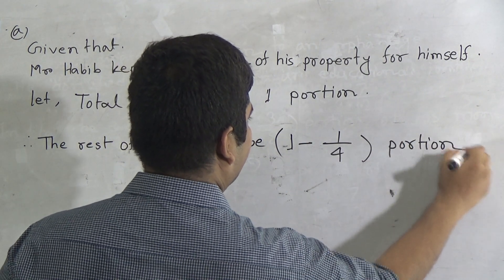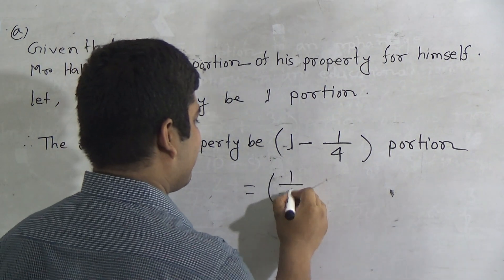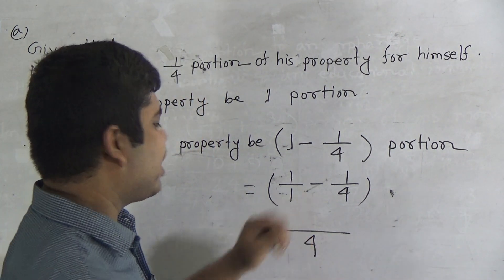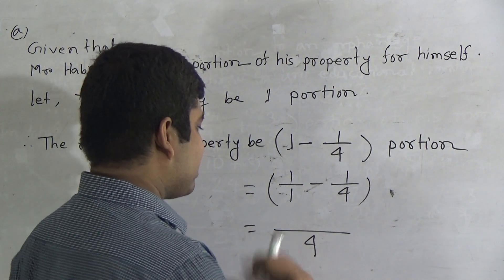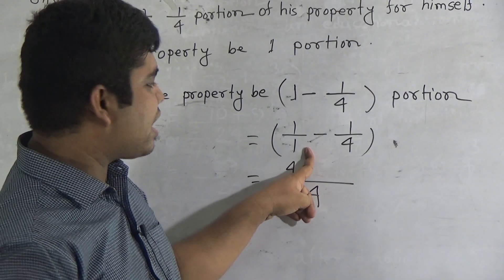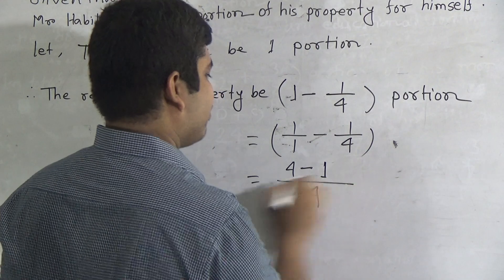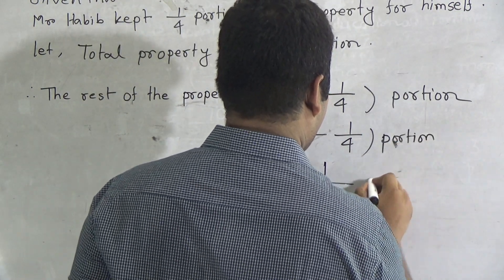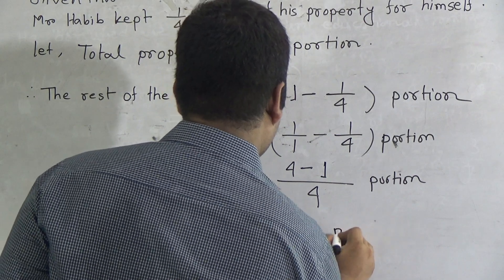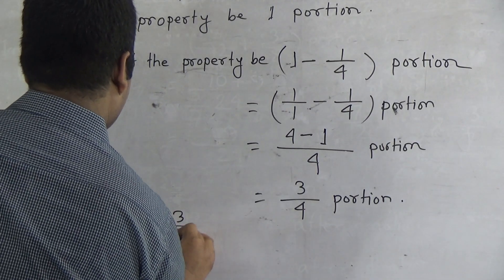Now we do subtraction. Every number has a denominator of one, so we write this as one by one minus one by four. Four is the LCM. We divide four by one and get one; that one is multiplied with one to get one on top — wait, four is divided by one to get four, and four is multiplied with one to give us four on four. Then divide four by four, get one; one multiplied by one gives one. Finally, subtracting one from four gives us three by four portion. This is the answer.